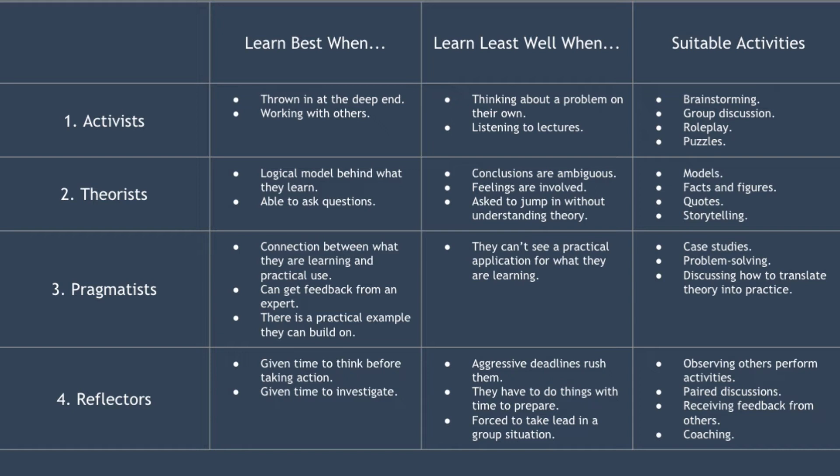Theorists learn least well when conclusions are ambiguous, when there are feelings and emotions involved, or when they're asked to jump in and do something without understanding the underlying theory. Activities suited to theorists include models, facts and figures, quotes, applying a theory, or storytelling.